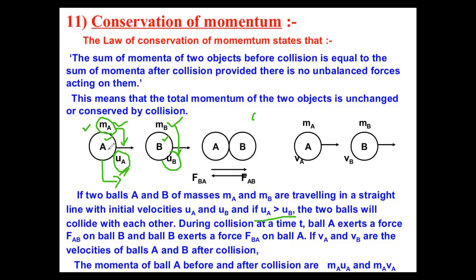So I should increase the velocity of the first body. Only then, when both bodies are moving in a straight line, will body A — having the greater velocity — collide with body B. That is why the initial velocity of body A must be greater than the initial velocity of body B.